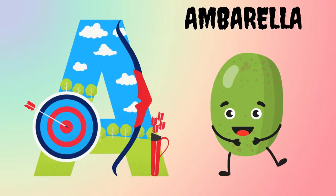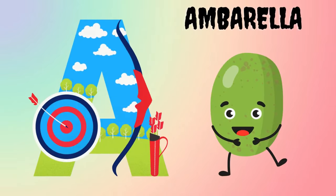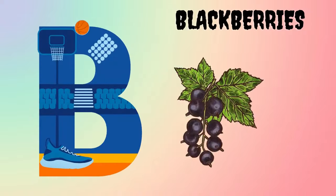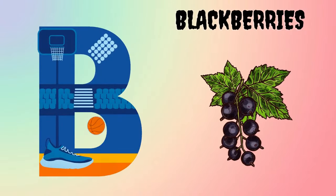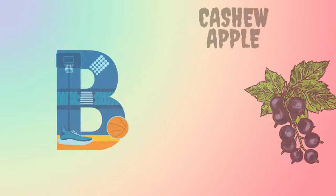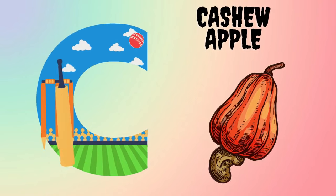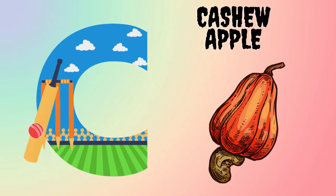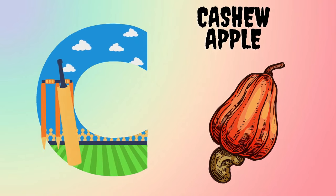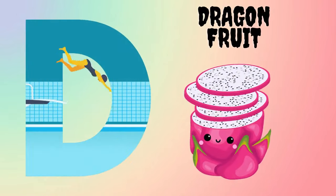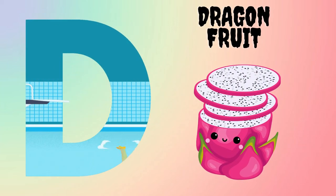A is for Ambarella. B is for Blackberries. C is for Cashew Apple. D is for Dragon Fruit.